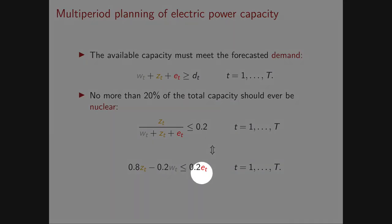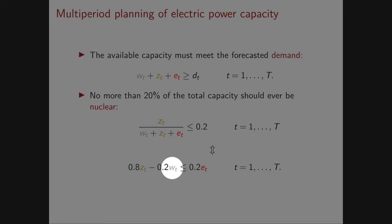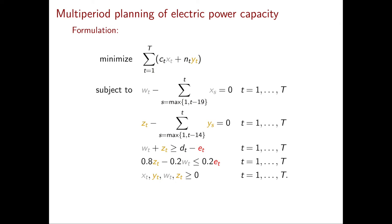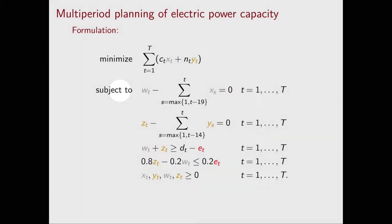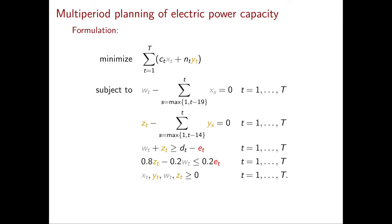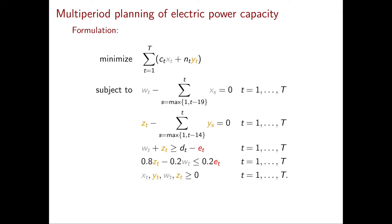We put all decision variables on the left-hand side and data on the right-hand side, since E_t is a given number for every t. We can now write down the full linear programming formulation: minimize the objective function subject to the equality constraints defining w_t and z_t, the demand inequality, the nuclear capacity inequality, and the non-negativity constraints that all decision variables x_t, y_t, w_t, z_t are greater than or equal to zero.